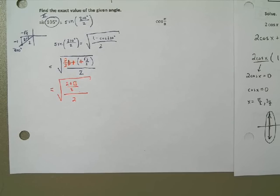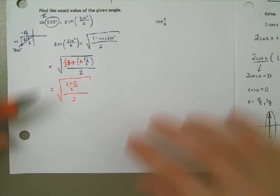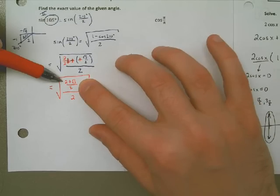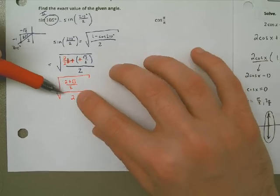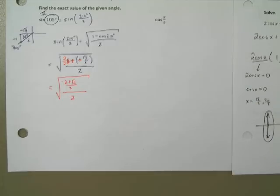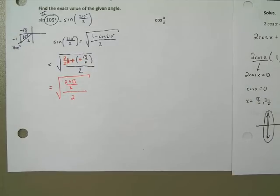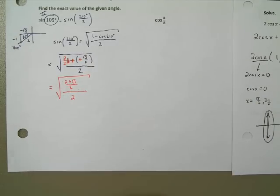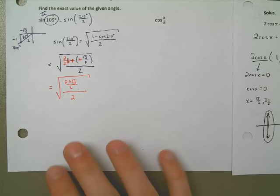For the last step, instead of dividing by 2, I'm going to multiply by one half. That gives me the square root of 2 plus the square root of 3, all over 4.